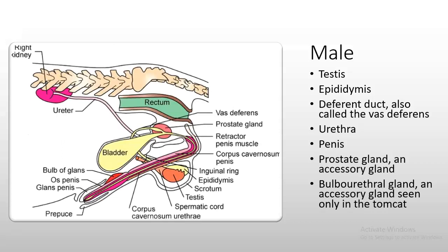Focusing on the male, the areas of interest we'll discuss in greater detail are the testes, the epididymis, the deferent duct (also called the vas deferens), the urethra, the penis, the prostate gland (which is an accessory gland), and the bulbourethral gland, which is an accessory gland seen only in the male tomcat.